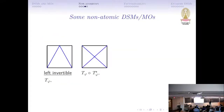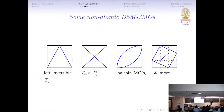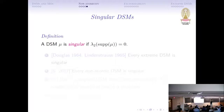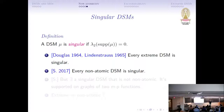Some non-atomic DSMs are the following: the left invertible and the right invertible DSMs. You can take the product of left invertible and right invertible Markov operators and get something that is also non-atomic. And the hairpin Markov operators are also non-atomic. Many of these have nice-looking supports, and it has something to do with singular DSMs. A singular measure is just a measure whose support has Lebesgue measure 0. In 1964 and 1965, Douglas and Lindenstrauss proved that every extreme DSM is singular. Because we want to think of non-atomicity as being a property of extreme DSMs, we proved that non-atomic DSMs are singular.